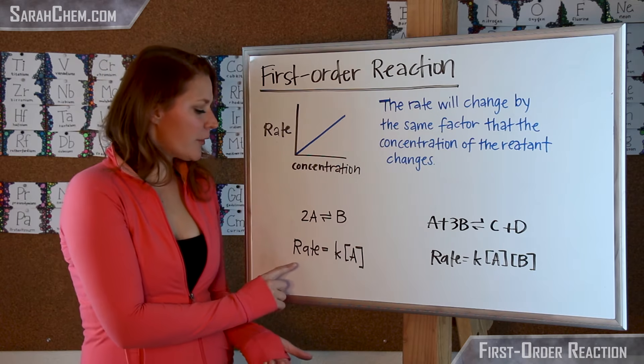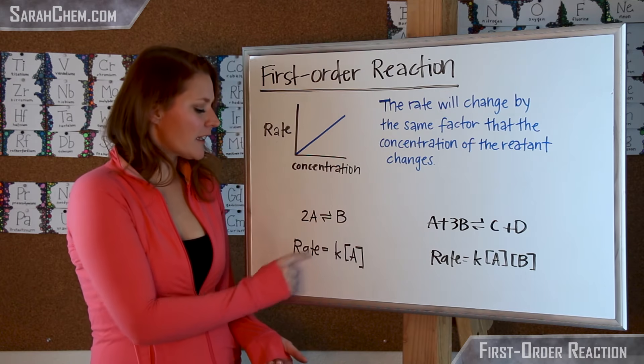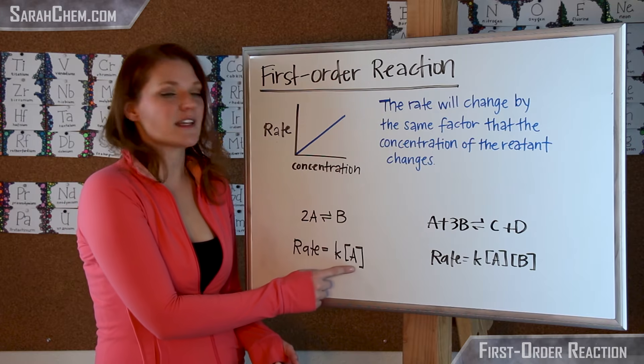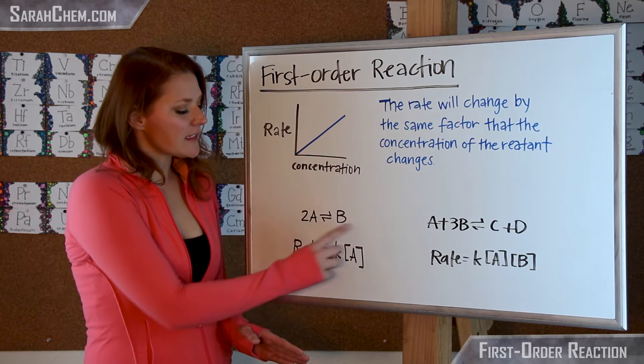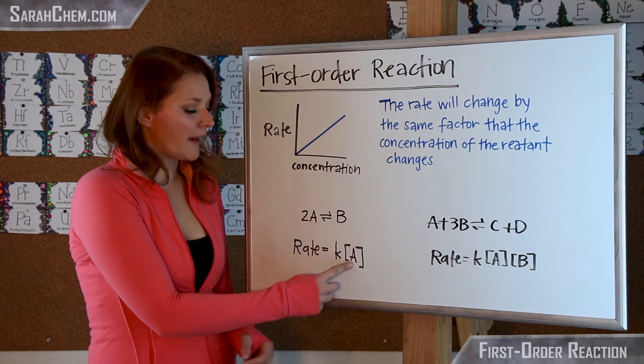So if I take a look here, let's say that the reaction is 2A goes to B and I find that the rate is equal to k times A. What that means then is that this is going to be first order with respect to A.